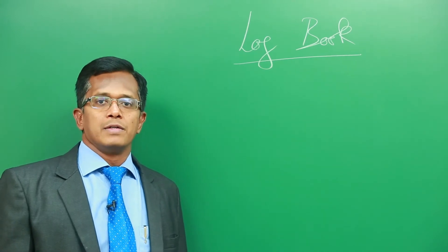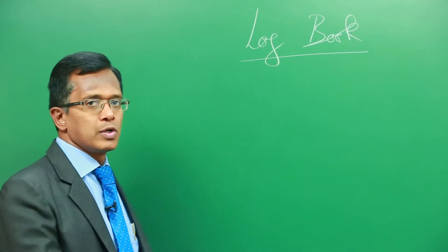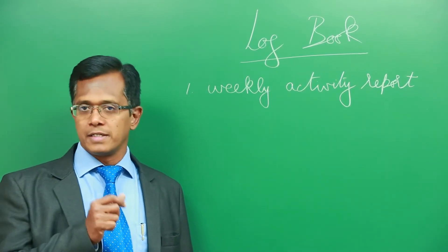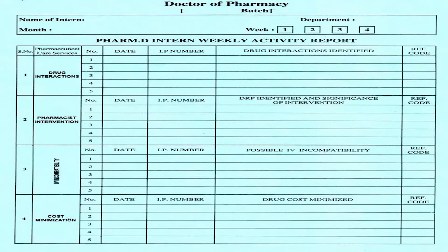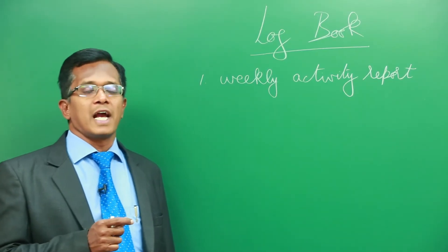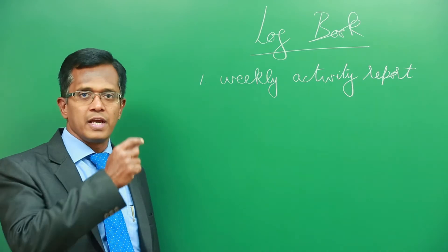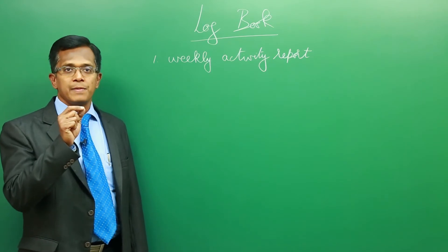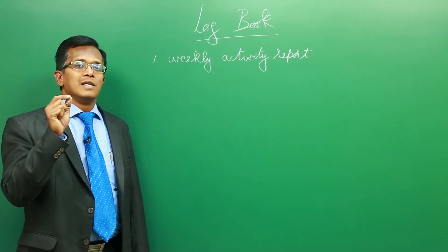What are the documentation required in the logbook? The logbook should have the weekly activity report of the intern. This weekly activity report format consists of the name of the intern, which month they have started the internship, and during that month which week they have noted down these details and which department. All these pharmaceutical care activities should be mentioned there, along with the date, IP number, and the activity performed.